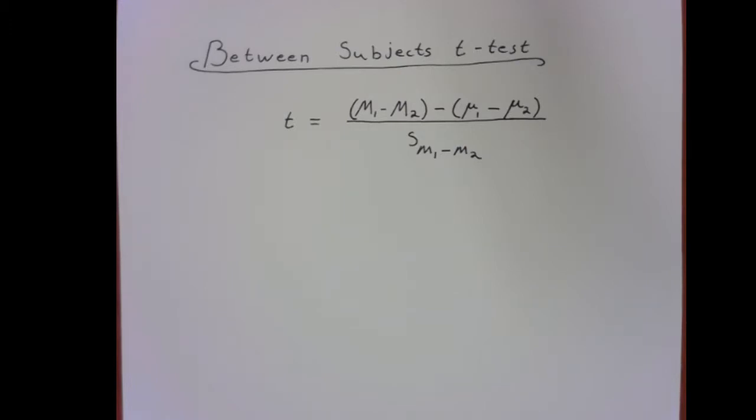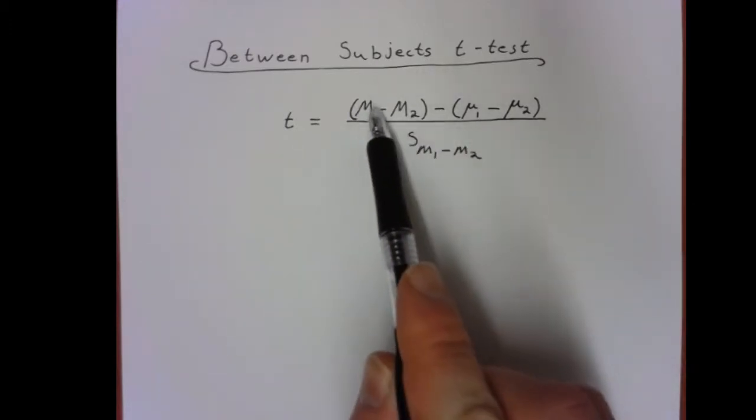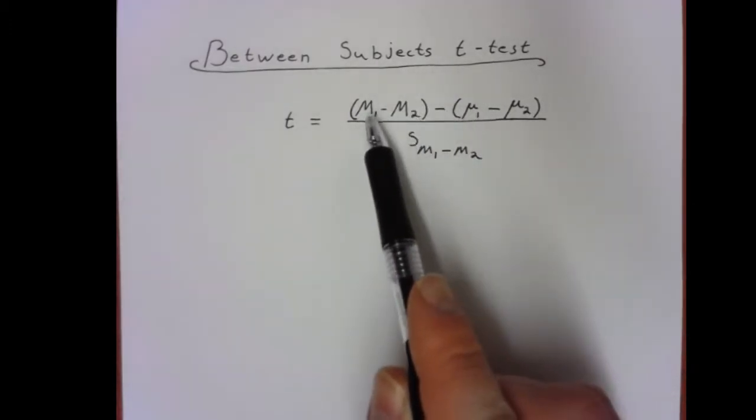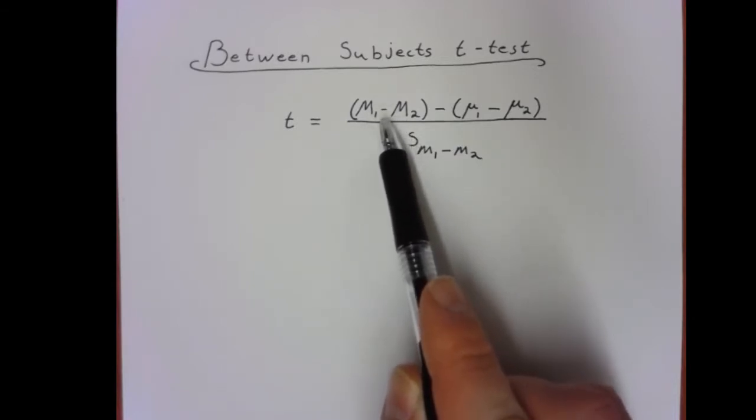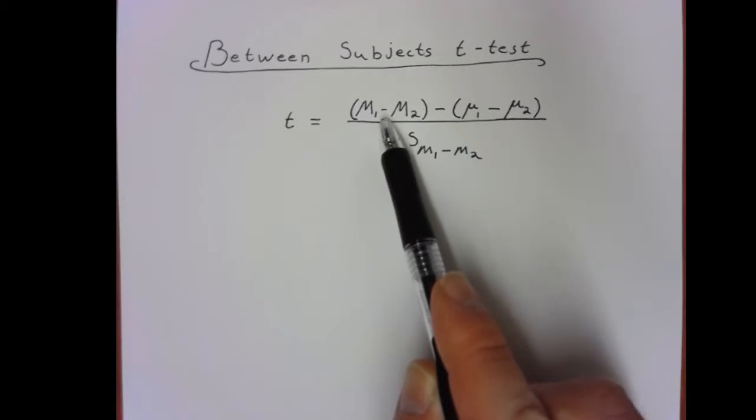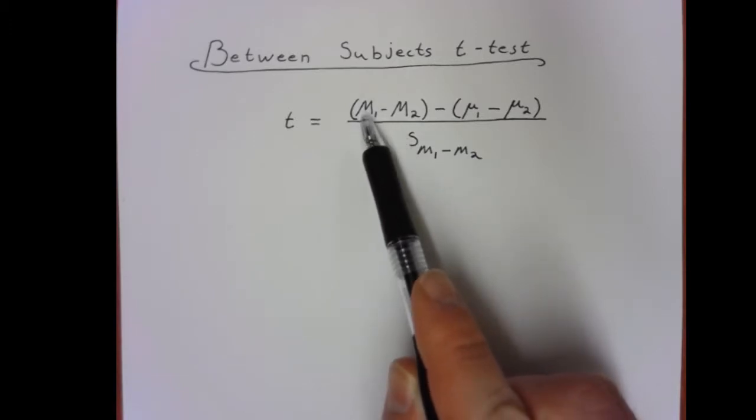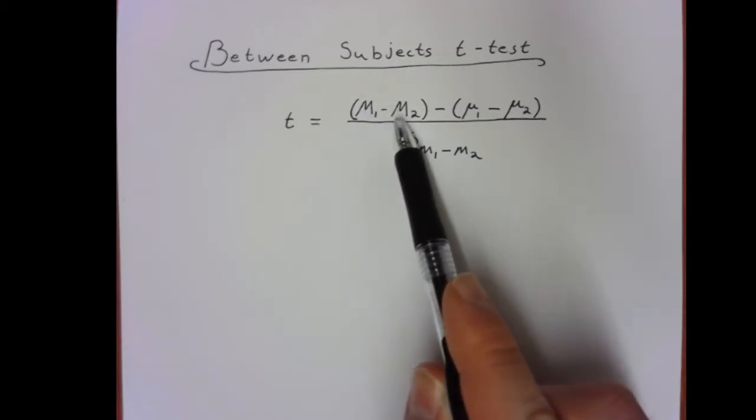So to break this down a little bit more, let's try and take it on one piece at a time, just conceptually. Let's start with the numerator here, and specifically let's start with m1 minus m2. This is actually probably the simplest part. We have the mean of sample 1 minus the mean of sample 2. We know how to calculate means, that's nice and simple.